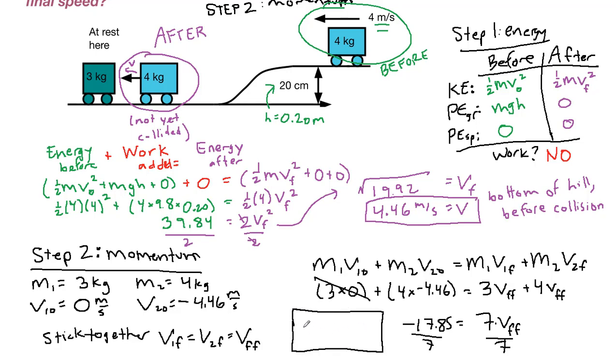The final answer is 2.55 meters per second, and we are still moving to the left. It makes sense that we slowed down in the collision because we lost a lot of the energy when we stuck together. This first step made sense because we sped up rolling downhill, but then we slowed down because we hit the object. These two steps both have to happen in that order. And as a reminder, the end of step one was the start of our step two, which is absolutely essential to understand.